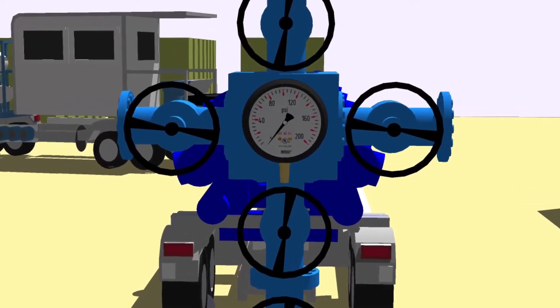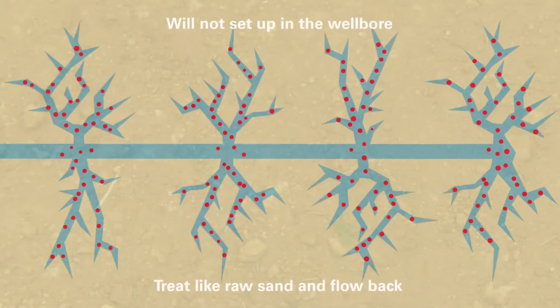Garnet is specially designed to only set up in the fracture once closure stress is applied to the proppant, so it eliminates the possibility of bonding in the wellbore.